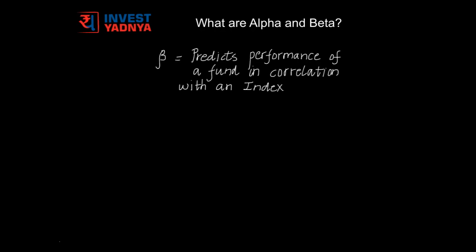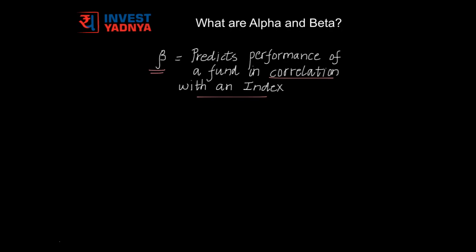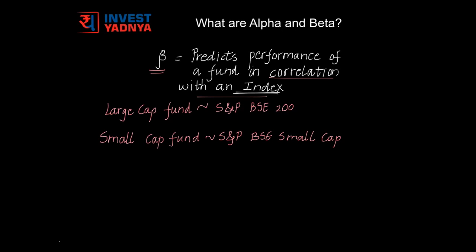What Beta tells you is what would be the fund performance in correlation with an index. Now, this index that the fund correlates to cannot just be any index — it cannot just be Sensex or Nifty, because Nifty is made of 50 stocks whereas Sensex is made of just 30 stocks. A fund could hold stocks which do not form the Sensex or the Nifty. From the objective of a fund, you may know what is the investment strategy. For example, large cap funds invest only into large cap stocks. There is an index called S&P BSE 200 which tracks large cap stocks, so such funds could correlate to this index.